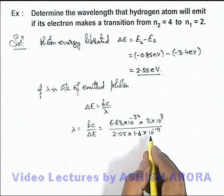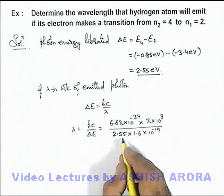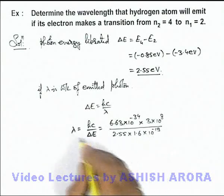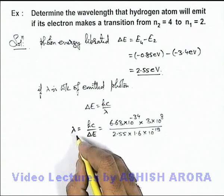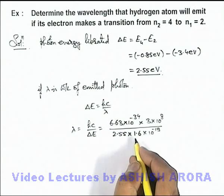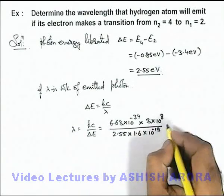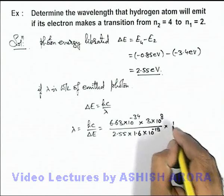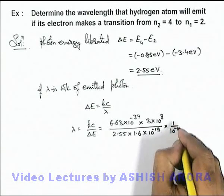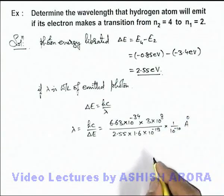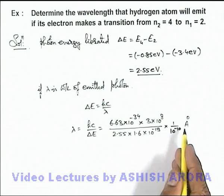Here we need to substitute the values in joules to convert the wavelength in meters. And if we wish to convert it into angstrom, we can divide it by 10⁻¹⁰, so units will be converted from meters to angstrom.